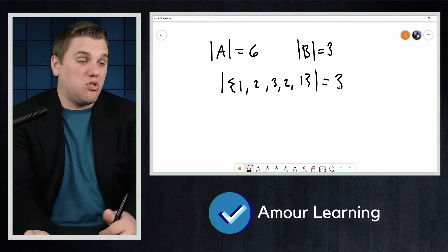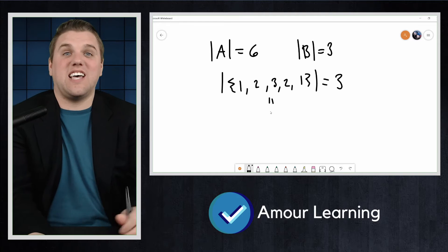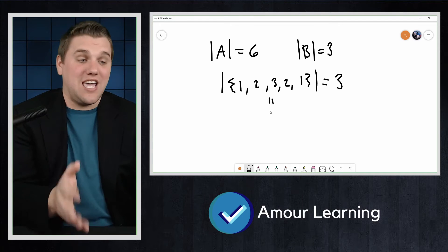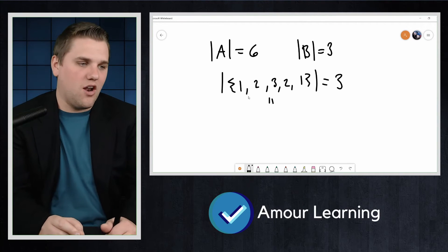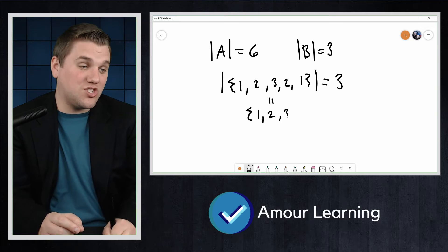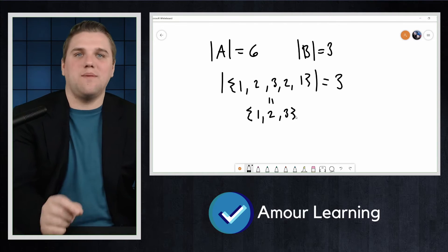In fact, {1, 2, 3, 2, 1} is exactly the same set as {1, 2, 3}. Those two sets are the exact same sets.